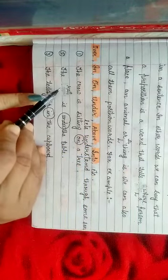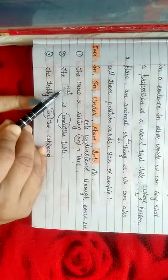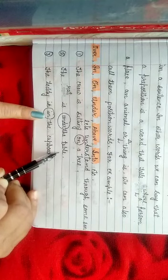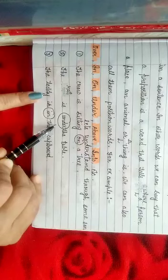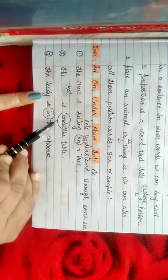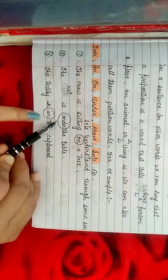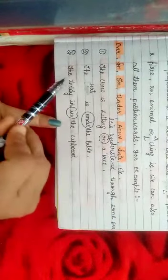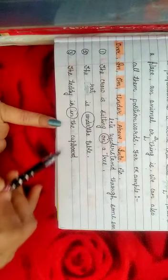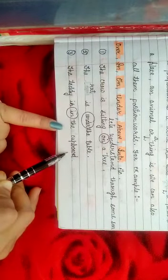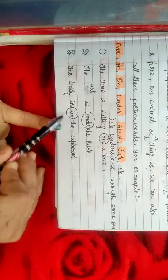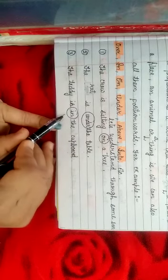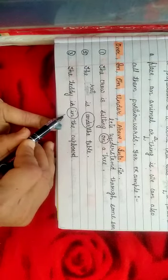One more example: the teddy is in the cupboard. Teddy kahaan par hai? Cupboard ke andar. So the preposition here is 'in'. Thik hai? Yehaan tak samajh mein aa gaya aapko?